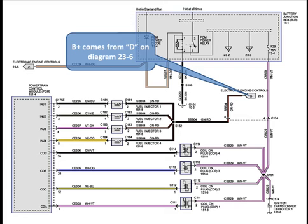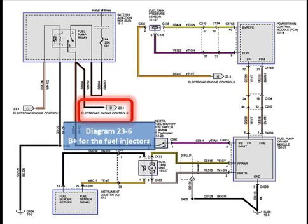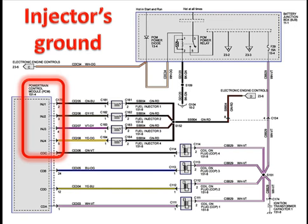We can find out that V-plus comes from terminal D on diagram 23-6. Let's go to 23-6 momentarily. Here's 23-6 — there's point D. It's coming off the fuel pump relay, coming off V-plus, and it's hot at all times. So we know for sure that is the V-plus side. The other side, therefore, must be ground.